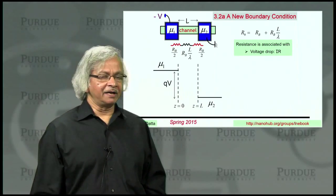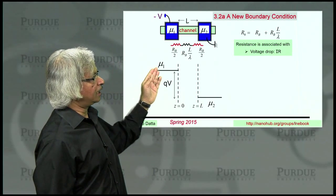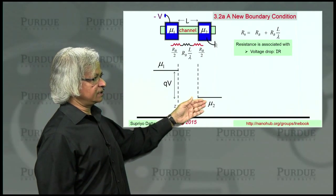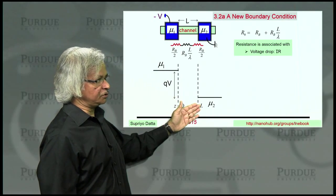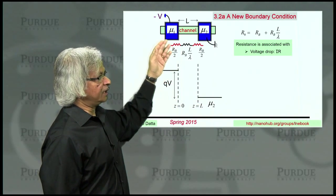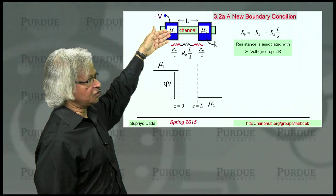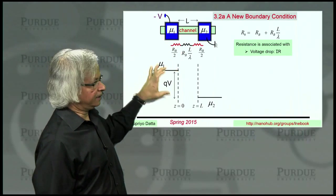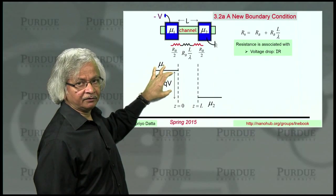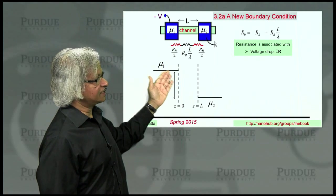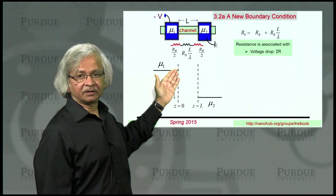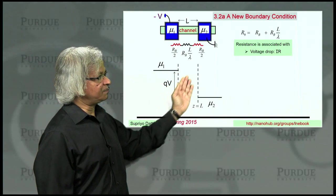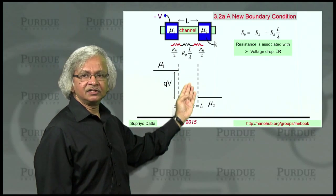So how do you locate this electrochemical potential? In the sense, how does it drop? How does it vary across the device? Well, you start by noting that in the two contacts, it has these two different values, mu 1 and mu 2. And because you have put a negative voltage on the source relative to the drain, this side is higher up. And they are separated by the applied voltage. And the question is, how does the electrochemical potential vary spatially inside the channel?